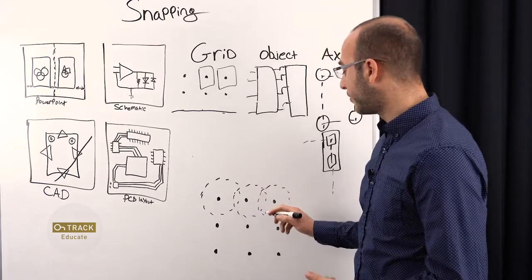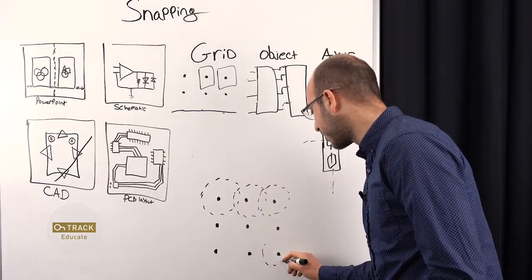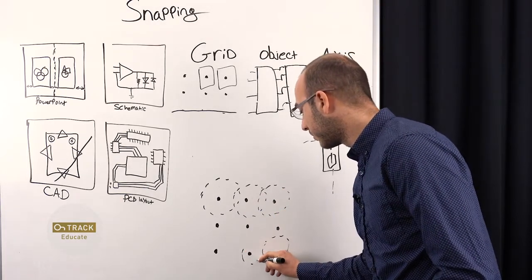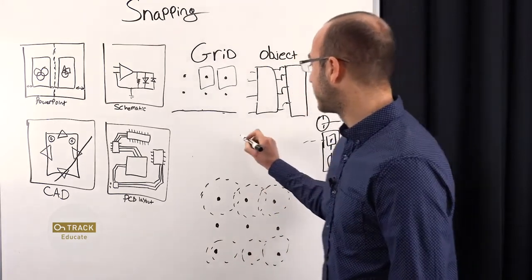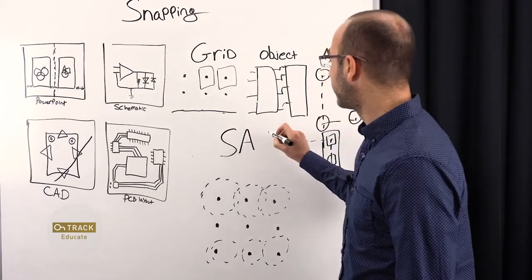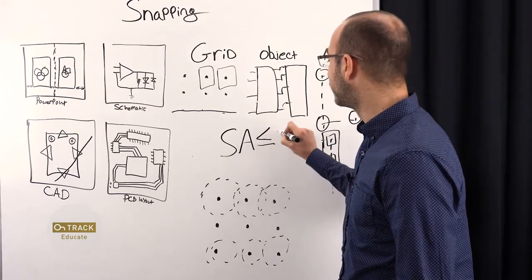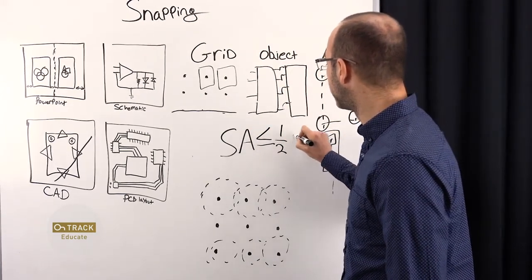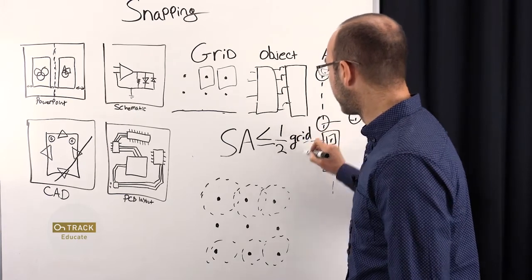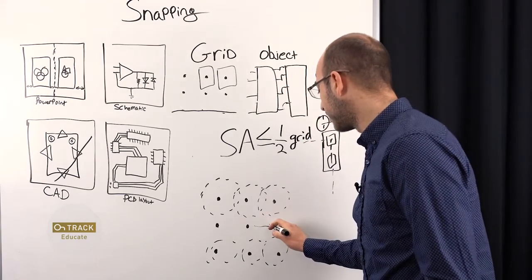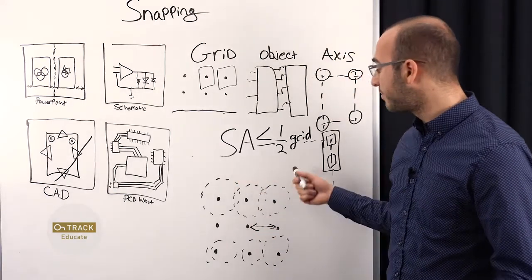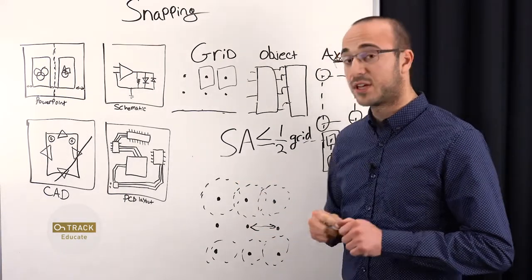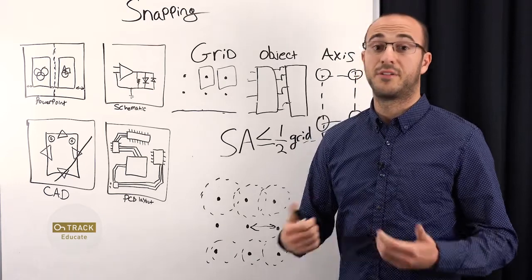So what you want to do to avoid this, to have snapping areas that don't overlap, is to have your snapping area, let's call snapping area SA, we want that less than or equal to one half of our grid length. And the grid length is from one point of the grid to another. So if you keep that in mind, you will save yourself a lot of headache really.